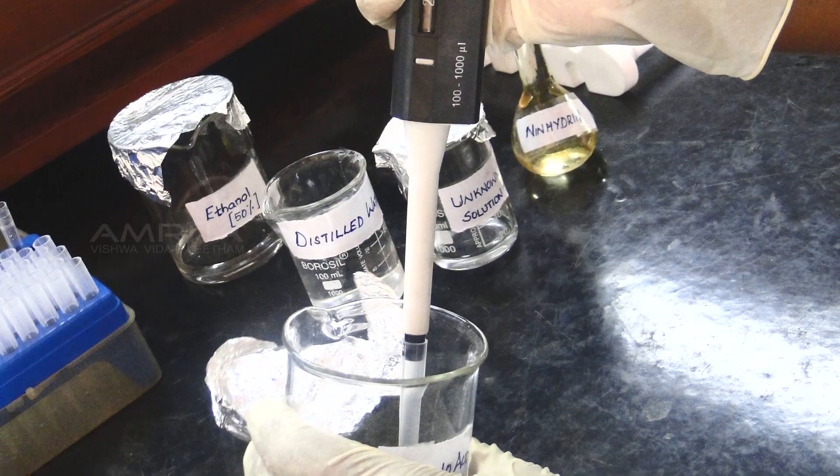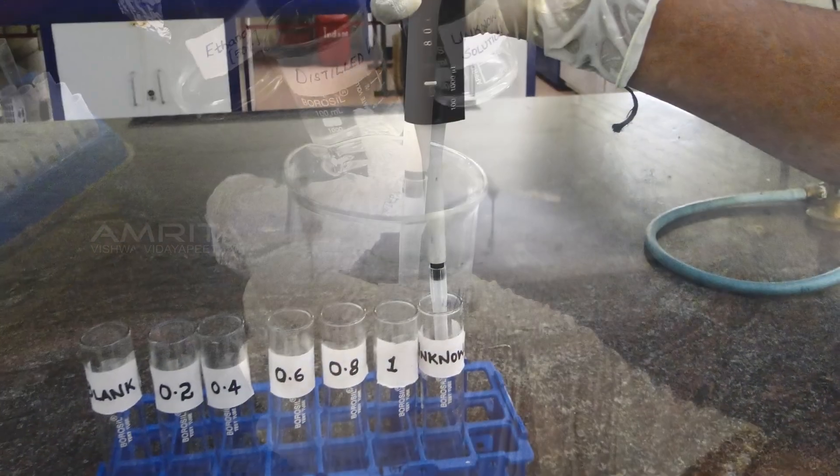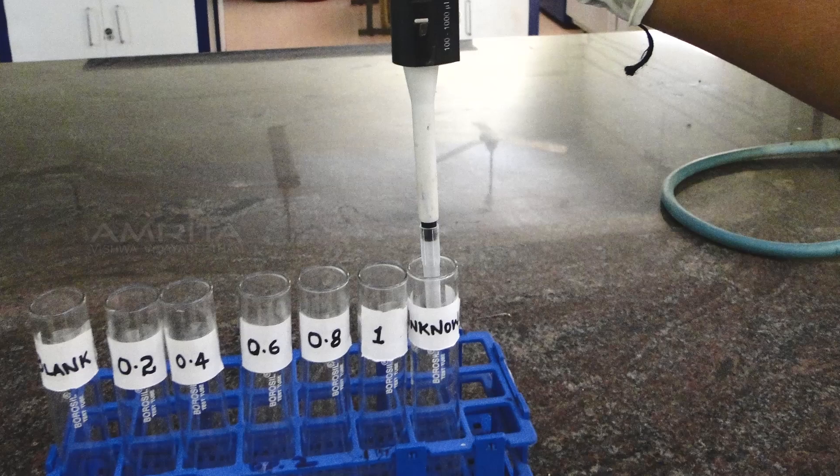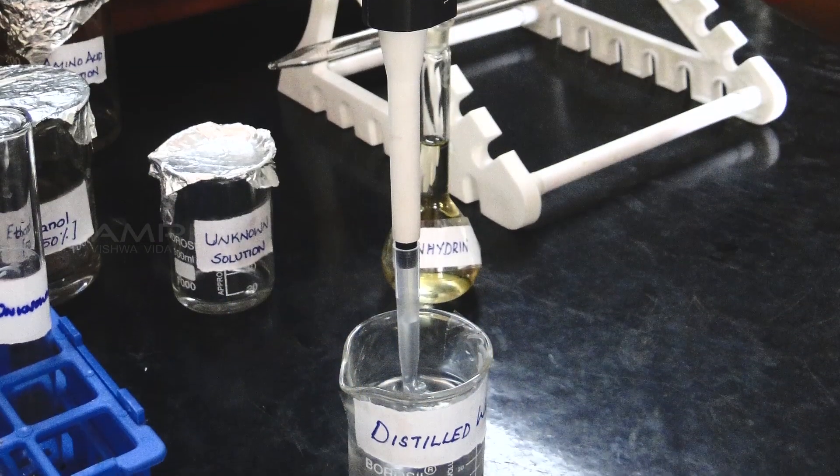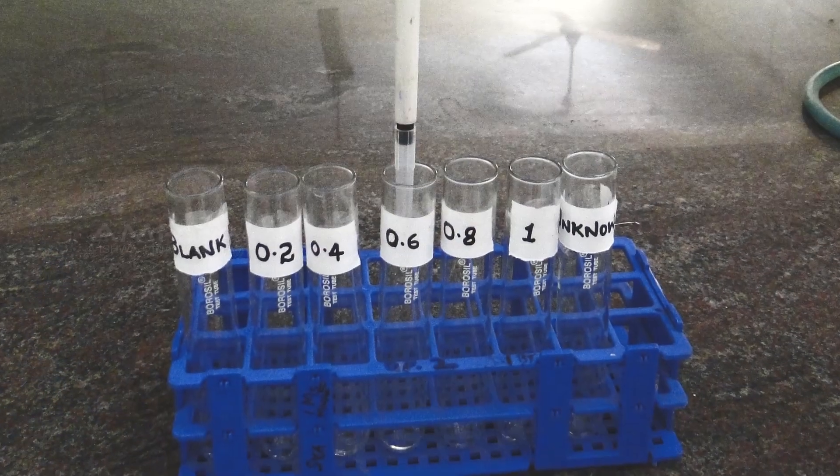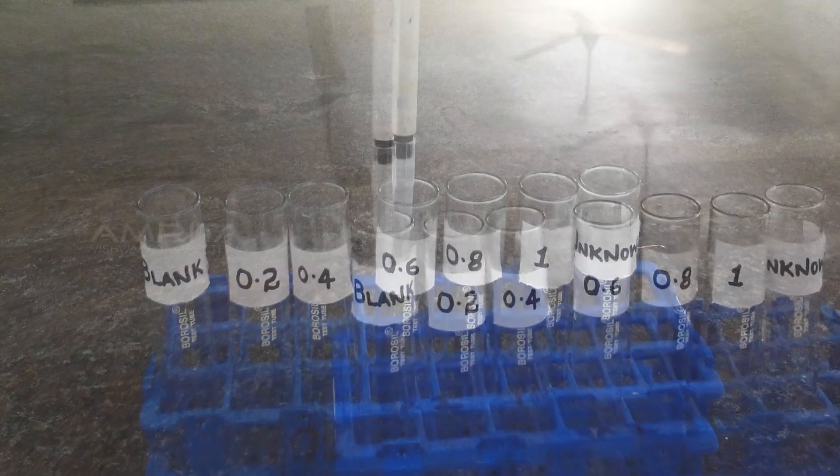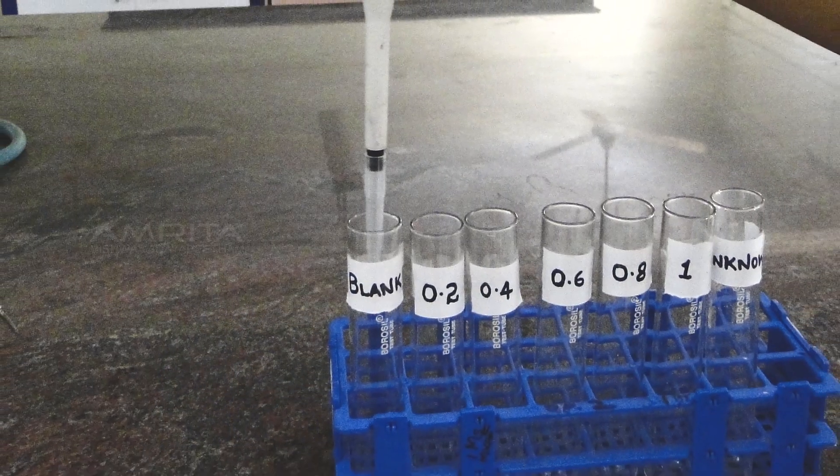Similarly, pipette out 0.8 ml of the same solution to the test tube labeled unknown. Add distilled water in all test tubes to make up the volume to 4 ml. Add 4 ml of distilled water to the test tube labeled blank.